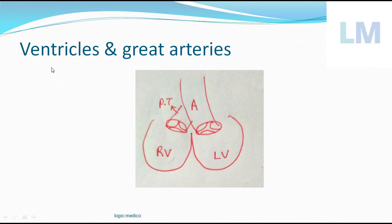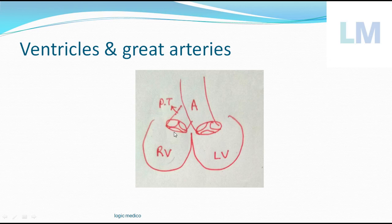Coming to the ventricles and great arteries: the right ventricle connects to the pulmonary trunk, and the left ventricle connects to the ascending aorta. Within these vessels there are three valves each - but we don't call them tricuspid here. Because each valve is shaped like a half moon, we call them semilunar valves. The semilunar valves of the aorta are called the aortic valve; the semilunar valves of the pulmonary trunk are called the pulmonary valve.